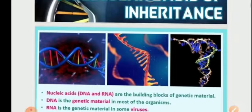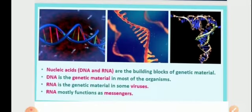The molecules which form the basis of inheritance are the nucleic acids comprising of DNA and RNA, which are the basic building blocks of our genetic material. DNA is found as the hereditary material in the majority of organisms, whereas RNA is found generally as genetic material in some viruses. RNA generally functions as a catalytic, adapter, and messenger molecule.